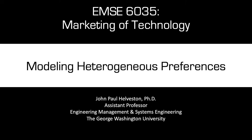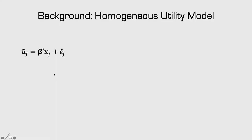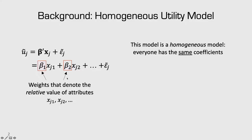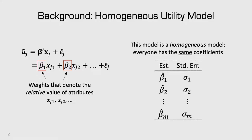Welcome to our last PCA, which is on modeling heterogeneity in preferences. Previously, every utility model we've discussed has usually been a homogeneous model. We've used a model for utility where you have an observed component and an unobserved component. The observed component is a sum product of beta coefficients and x attributes, and we've been interested in finding the values of these beta coefficients because they describe the relative value of each attribute x. These are homogeneous models because everyone has the same coefficients — even with data from hundreds of people, we only get one set of parameters and their standard errors.